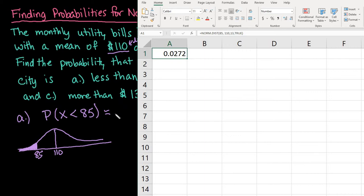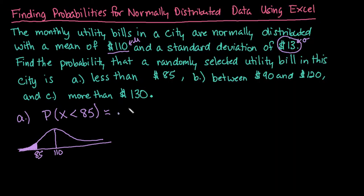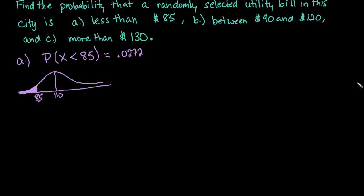The answer is 0.0272. So the probability of selecting a utility bill less than $85 is approximately 0.0272 or 2.72%.